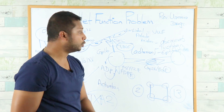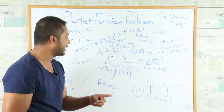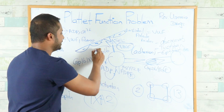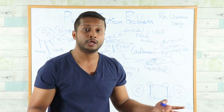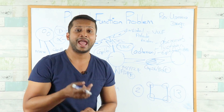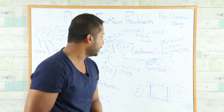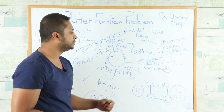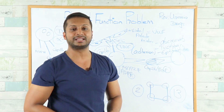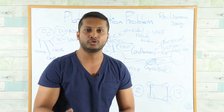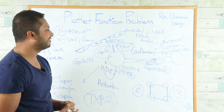If the platelet genetically lacks the GP1b receptor — which binds von Willebrand factor — the patient gets Bernard-Soulier disease. This is also a defect of adhesion. If the patient congenitally lacks the GP2b3a receptor, they get Glanzmann's thrombasthenia, a defect of aggregation.